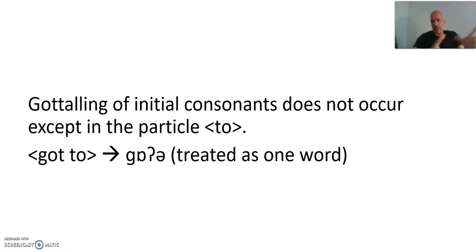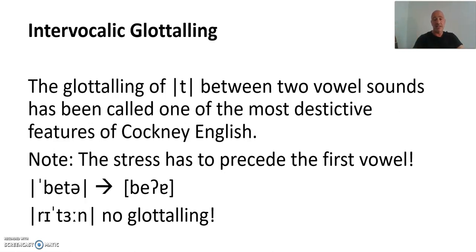Glottaling of consonants and where in the word does it occur? Initially, it doesn't occur at all. Except this one, to. This particle together with a verb, as in this example, I got to go there. Got to go there. I've got to go there. But it's more or less one word. I got to, it's so close together. I wouldn't call this initial glottaling. I would say it's glottaling between two vowel sounds. And we come to that now.